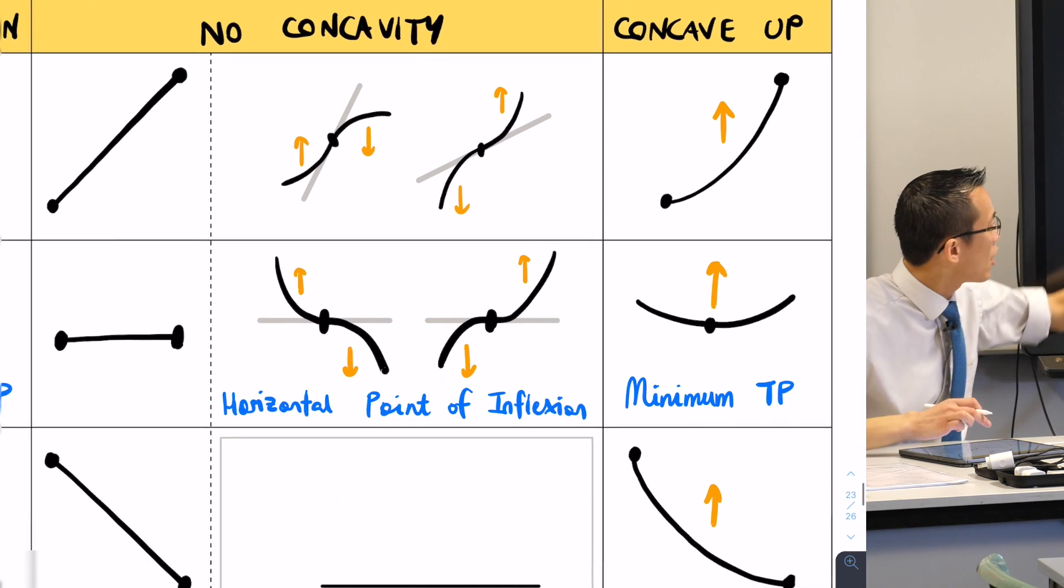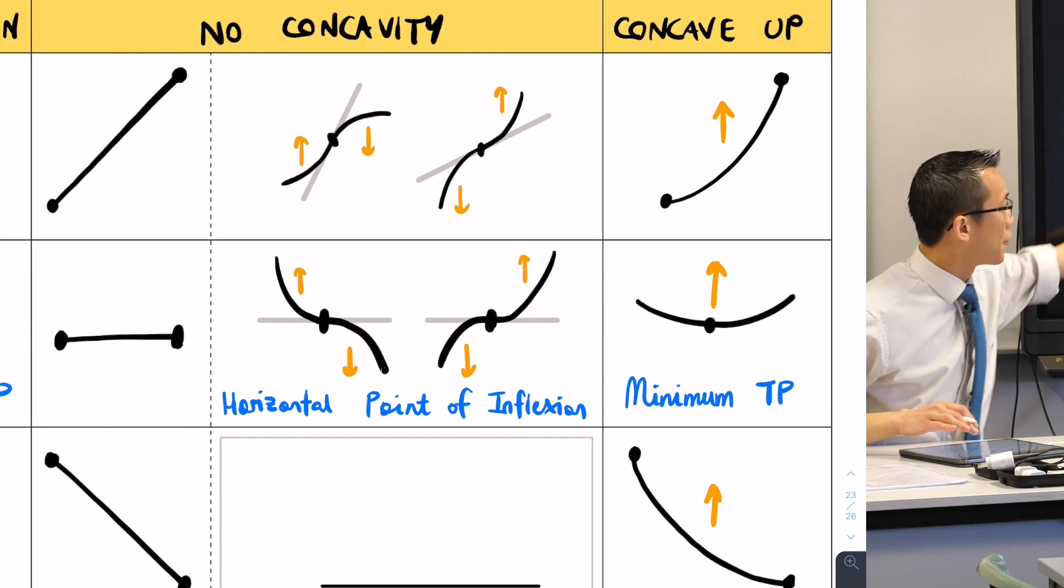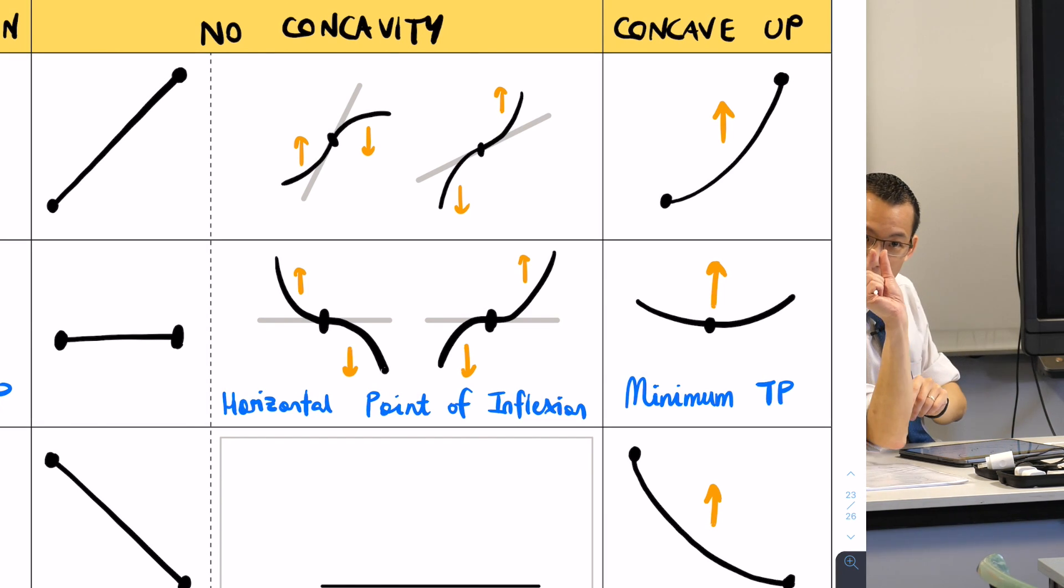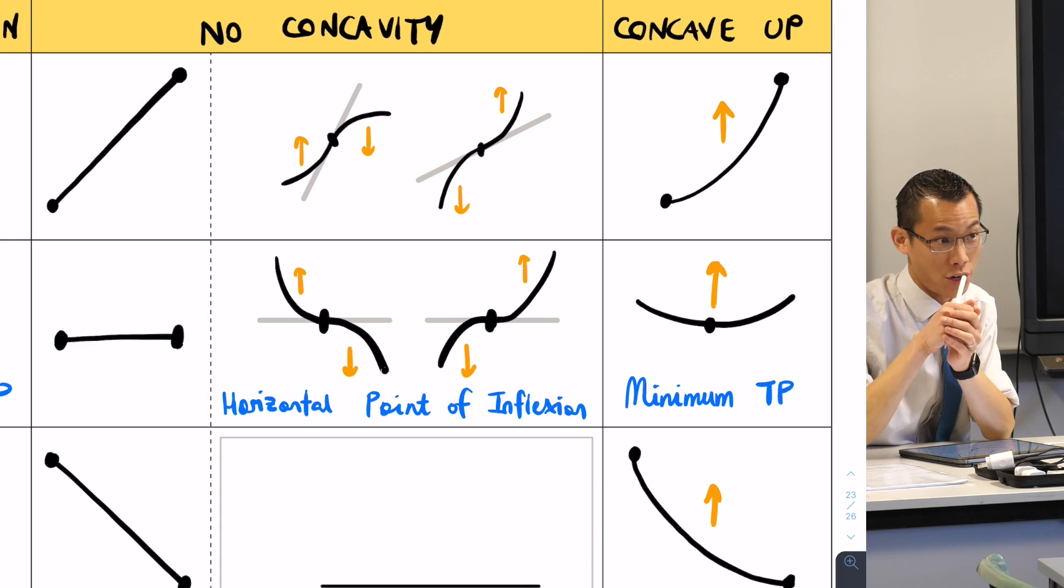So that's why you can see over here, these guys are straight lines. The whole thing has no concavity. But for these guys over here, there's just one little brief moment where there's no concavity. It's just the one where I put the dot.